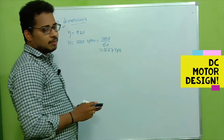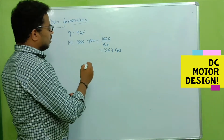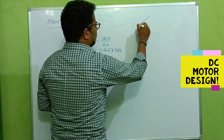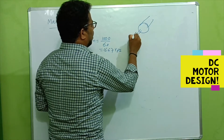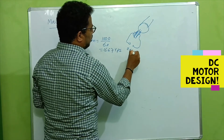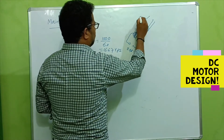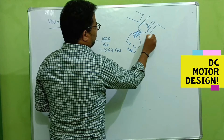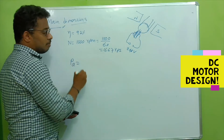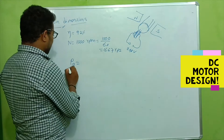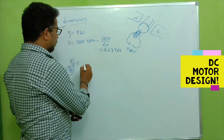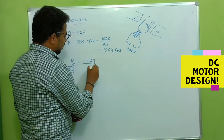Now, what is the power developed in the armature? Whenever we are supplying 240 volts DC to this motor — here is the armature, we have the commutator arrangement and brushes — there will be production of electromagnetic power in the armature, which we call Pa or Pe. The empirical formula is: Pa = ((1 + 2η) / 3η) × P.